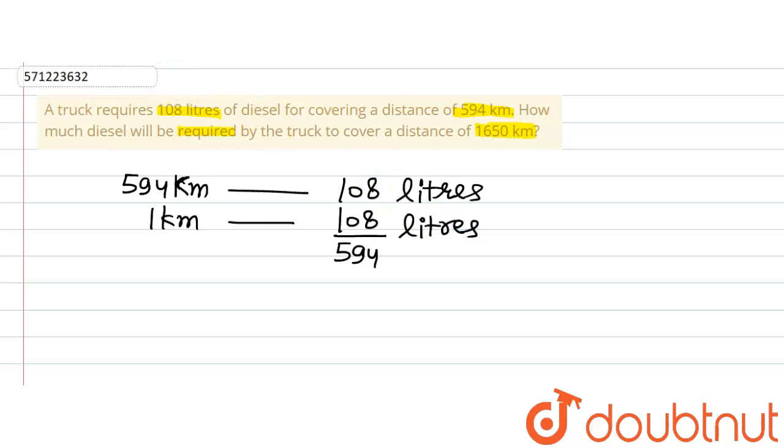In the question, we are asked to find the diesel required for covering 1650 kilometers. So we multiply the diesel required for one kilometer by 1650. This gives us 1650 multiplied by 108 divided by 594.